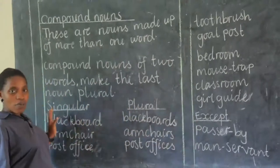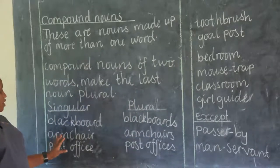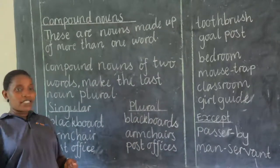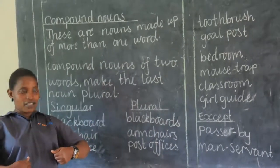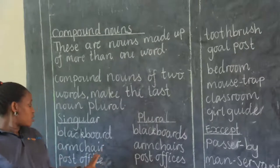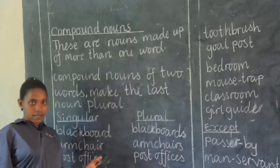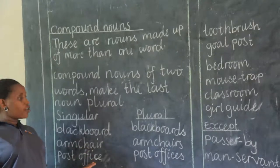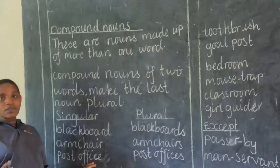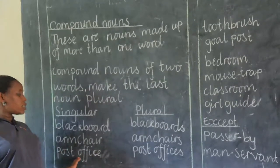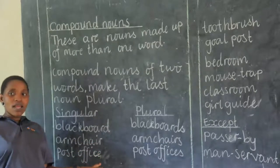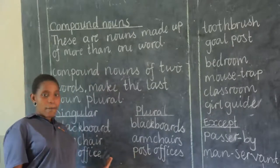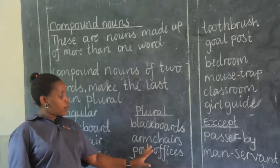It is very interesting to form compound nouns. We have arm and chair — most of your daddies have armchairs. When making it plural, it is armchairs. Then we come to post office. Post is a verb, and office is a place. When you join them together, it becomes a compound noun — post office — a place where we go to post our letters, telegrams, and others. In plural, it will be post offices. You see that we are making the last noun plural.